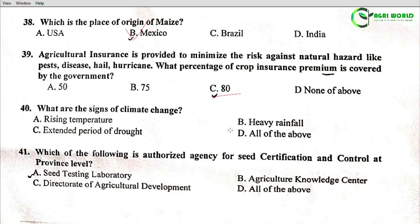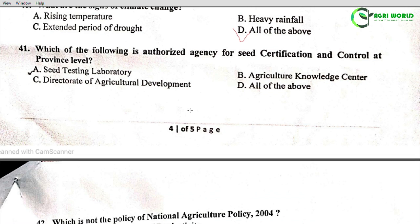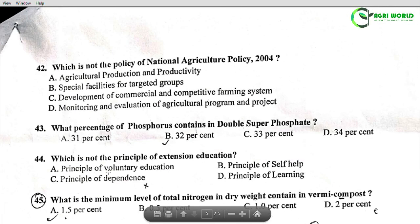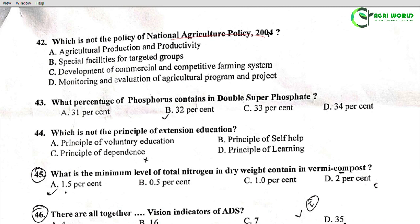Question 41: Which of the following is the authorized agency for seed certification and control at the province level? Option A: seed testing laboratory. Question 42: Which is not the policy of National Agriculture Policy 2004? The correct answer is Option D: monitoring and evaluation of agricultural programs and projects.